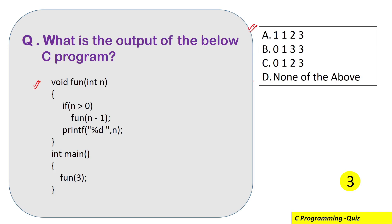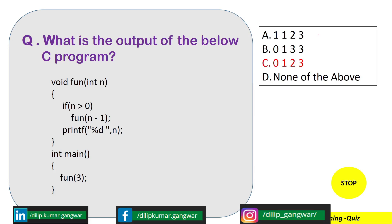I will start the timer and you can pause the video to find the answer by yourself, and after that I will explain the correct answer. The correct answer for this question is option C, that means 0, 1, 2, and 3 will come as the output.